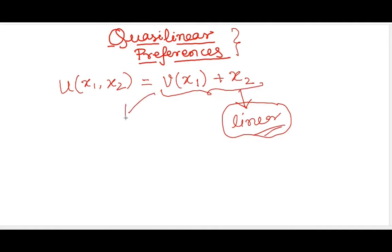And if I can give you an example, if I let's say give v(x1) as root x1 and x2 as x2. This is one example of quasilinear.